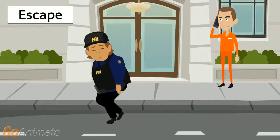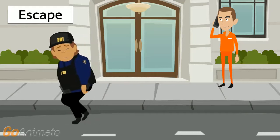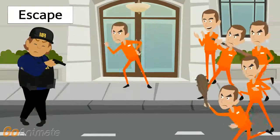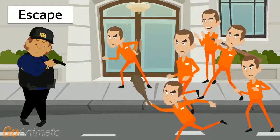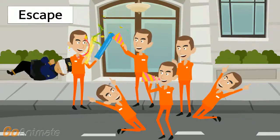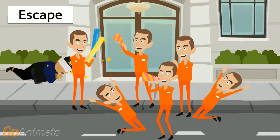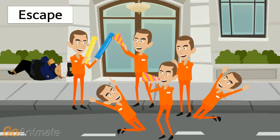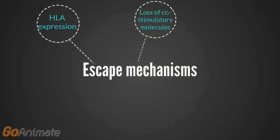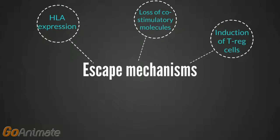The last stage is escape, in which the tumour begins to develop beyond the control of the immune system and becomes clinically observable. In our cops and robbers scenario, despite the best efforts of the cops, they become outnumbered and the robbers get away and can wreak havoc. There are several mechanisms used to achieve this escape from the immune system. For example, through the alteration of the expression of the HLA and the loss of co-stimulatory molecules, which are essential for an immune response.